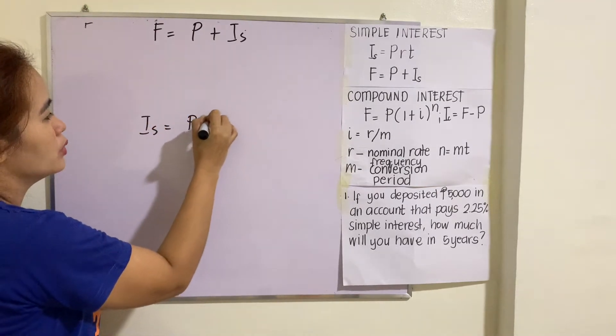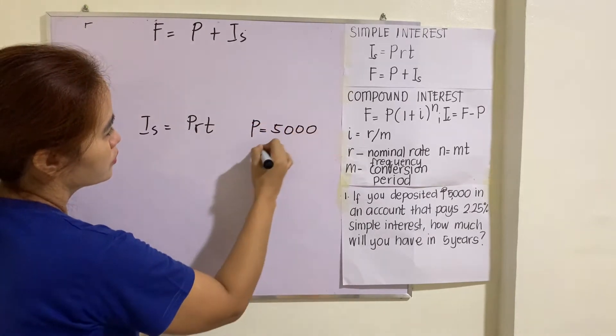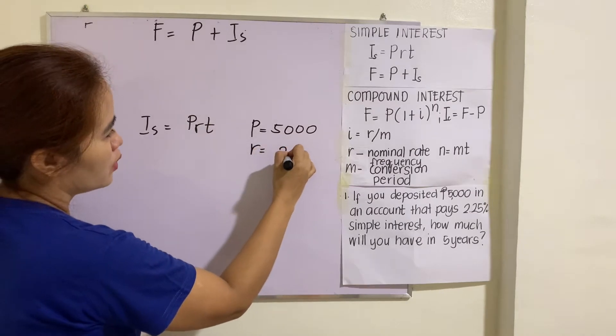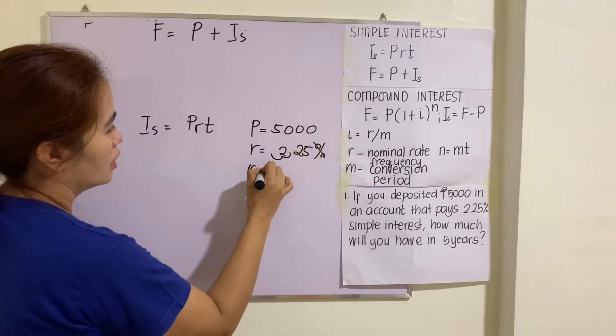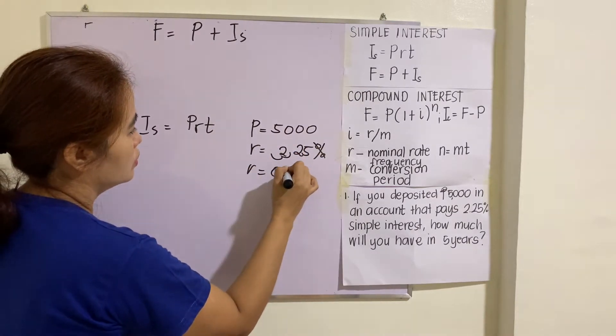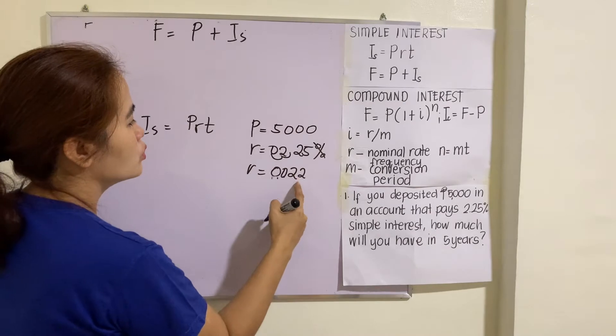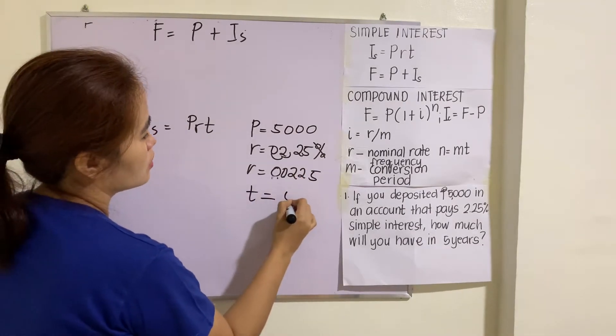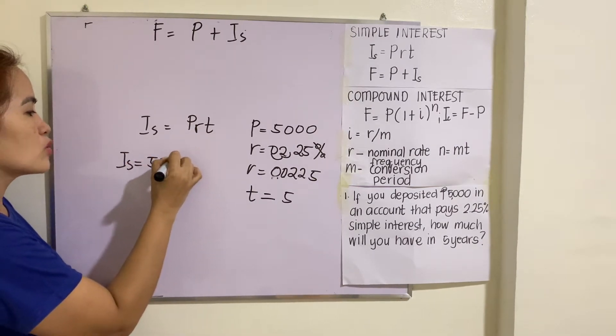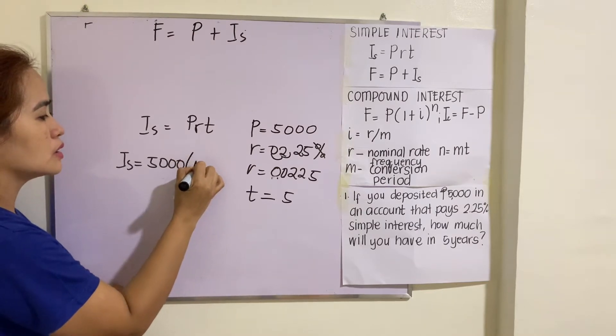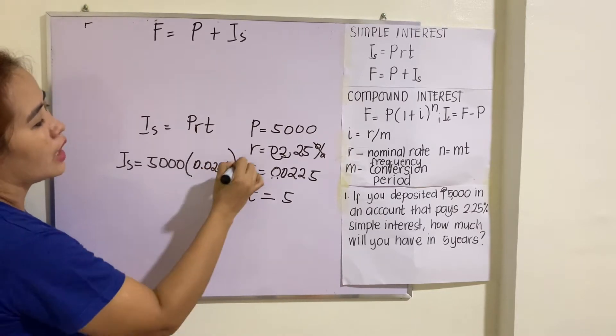So therefore we will be computing for I first. The given are: P = $5,000, R = 2.25%, changing it to decimal, that will be R = 0.0225, and T = 5. So we have I_s = 5,000 × 0.0225 × 5.